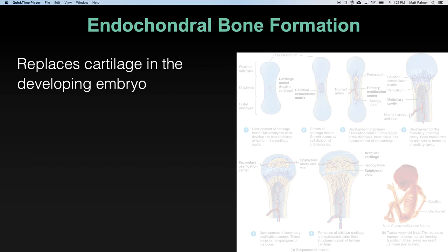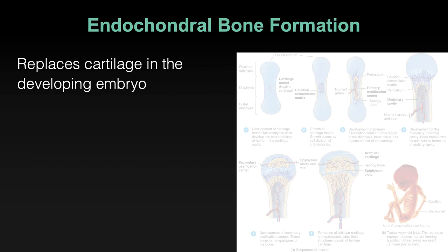We were discussing bone formation. Bone as a tissue — the long bone is our candidate example. We looked at the parts of it, the surface areas, and the divisions of a long bone. That's our candidate bone, the way to understand bone as a tissue.